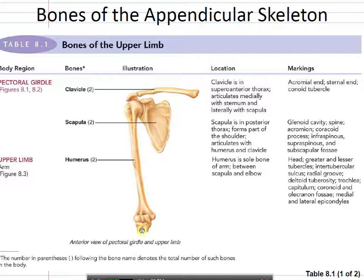Then the arm — the humerus — and then two in the forearm: the radius and the ulna. The radius is on the lateral side, on the same side as the thumb. I always remember that's the side that rotates most easily. The ulna sits on the medial side — by the pinky — and the radius is on the side with the thumb.